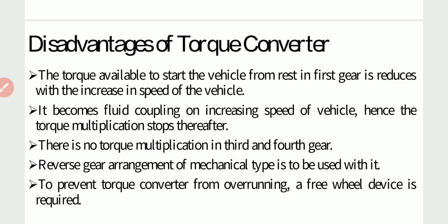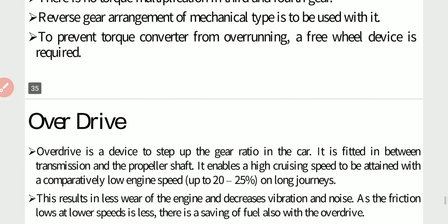Disadvantages of torque converter: the torque available to start the vehicle from rest in first gear reduces with increasing speed of the vehicle. It becomes a fluid coupling on increasing speed, hence torque multiplication stops. There is no torque multiplication in third and fourth gear. At overdrive condition, torque multiplication does not occur. A reverse gear arrangement of mechanical type must be used with it, and a free wheel device is required to prevent the torque converter from overrunning.